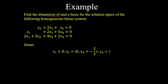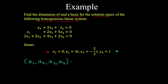We're asked to find the dimension of, and a basis for, the solution space of a homogeneous linear system. We solved it previously using Gaussian elimination and found the solution in parametric form. The solution tuple (x1, x2, x3, x4) is equal to some scalar t multiplied by a vector, where x1 is 0, x2 is 4t, x3 is -5/2 t, and x4 is t.